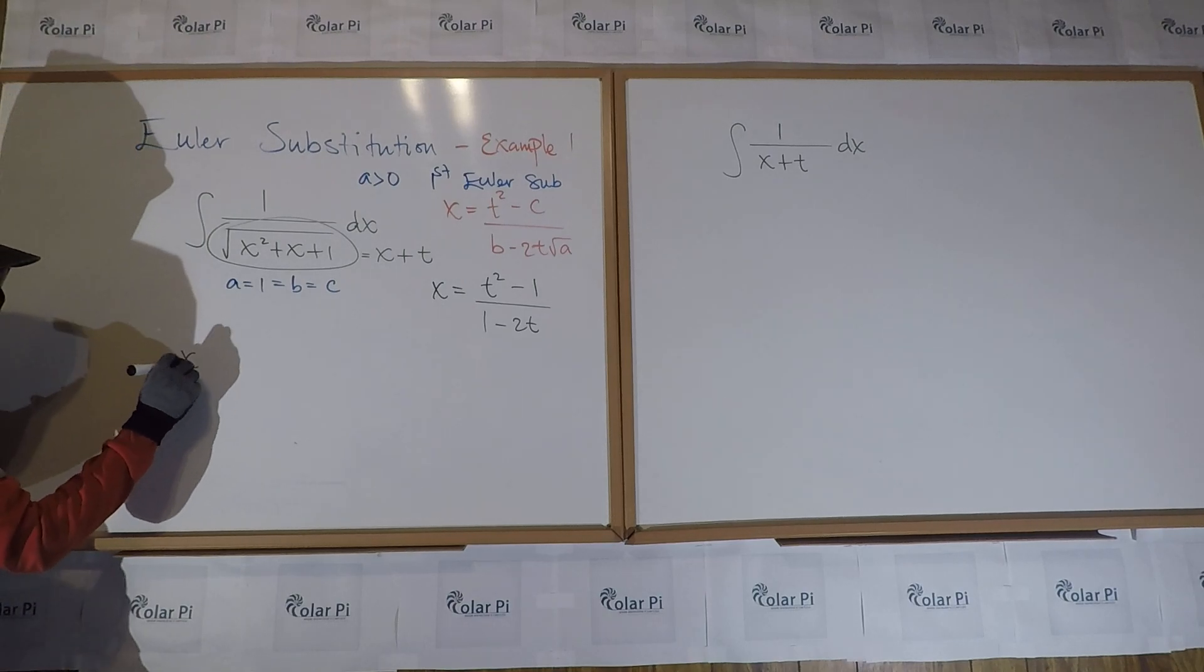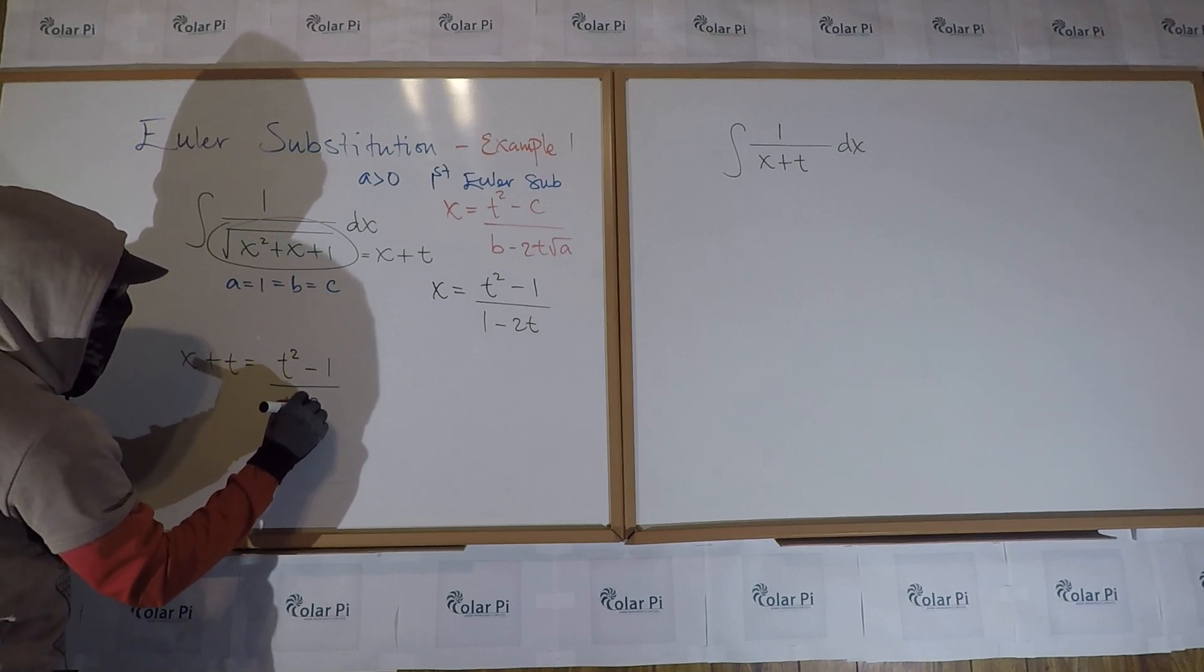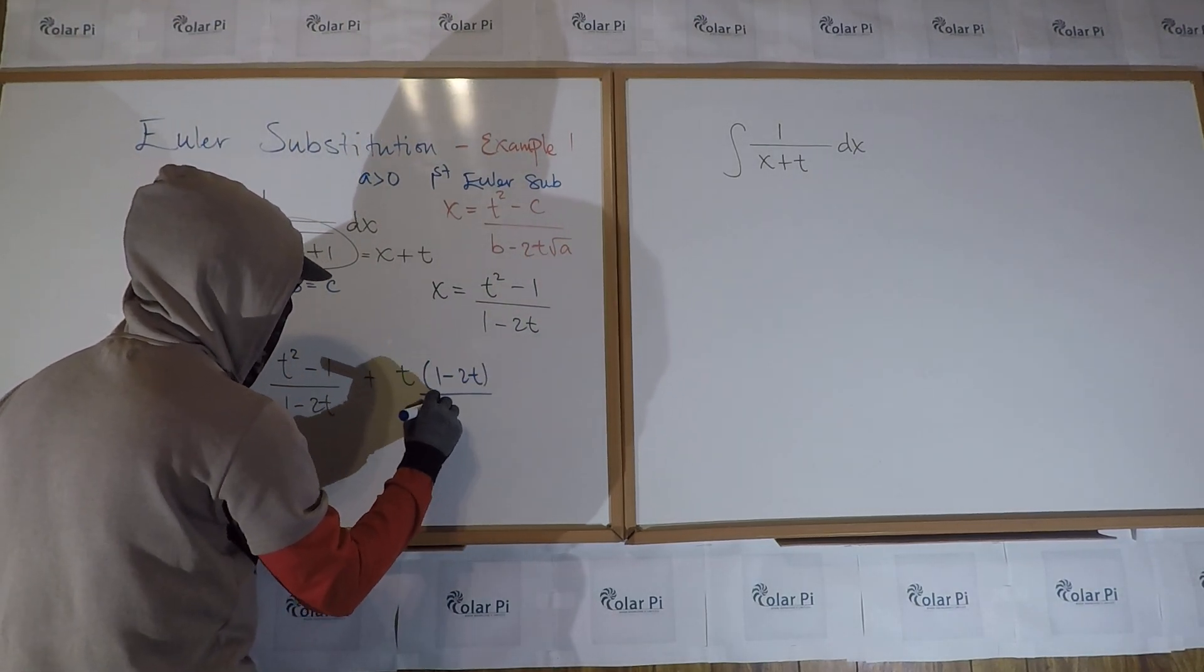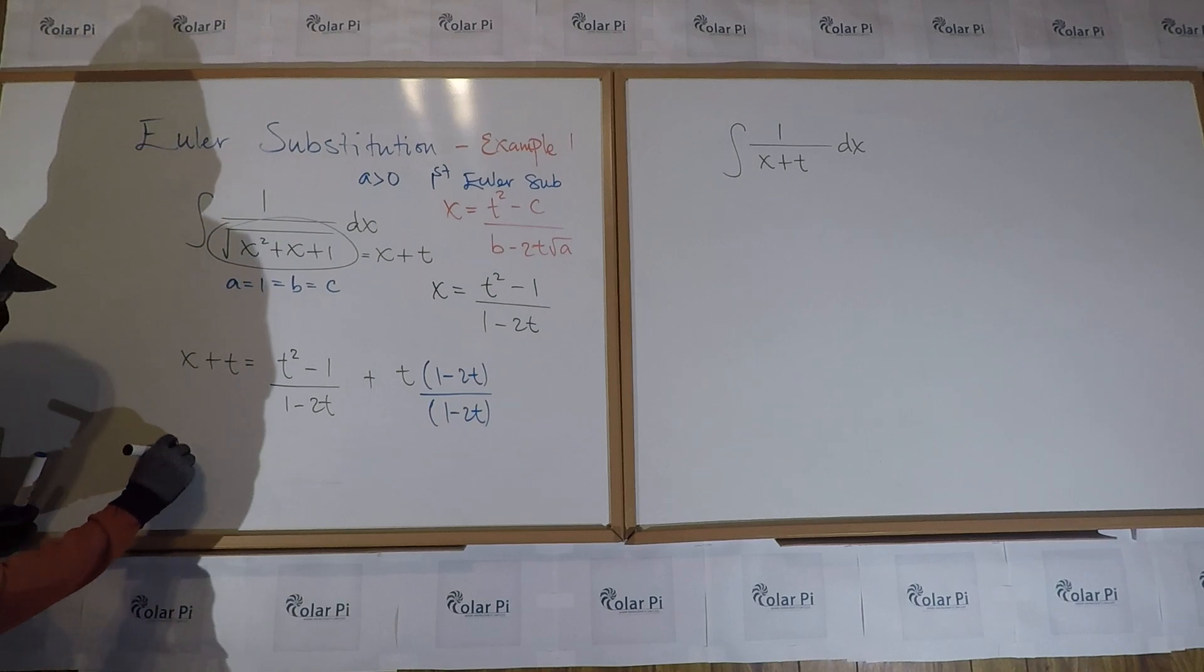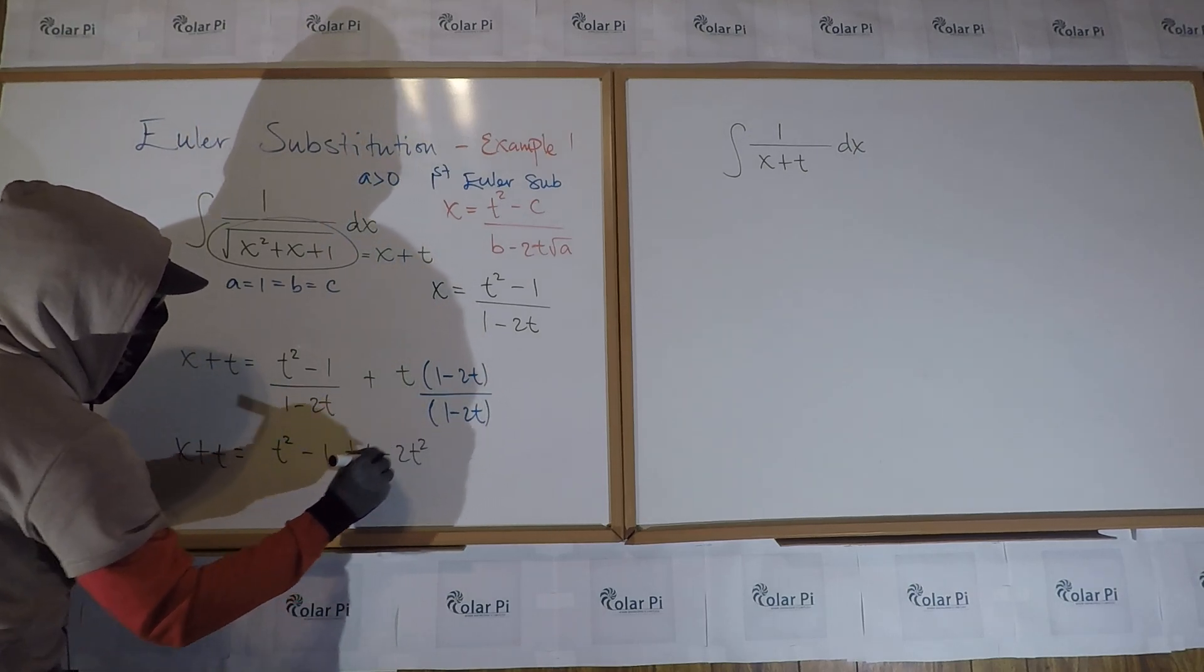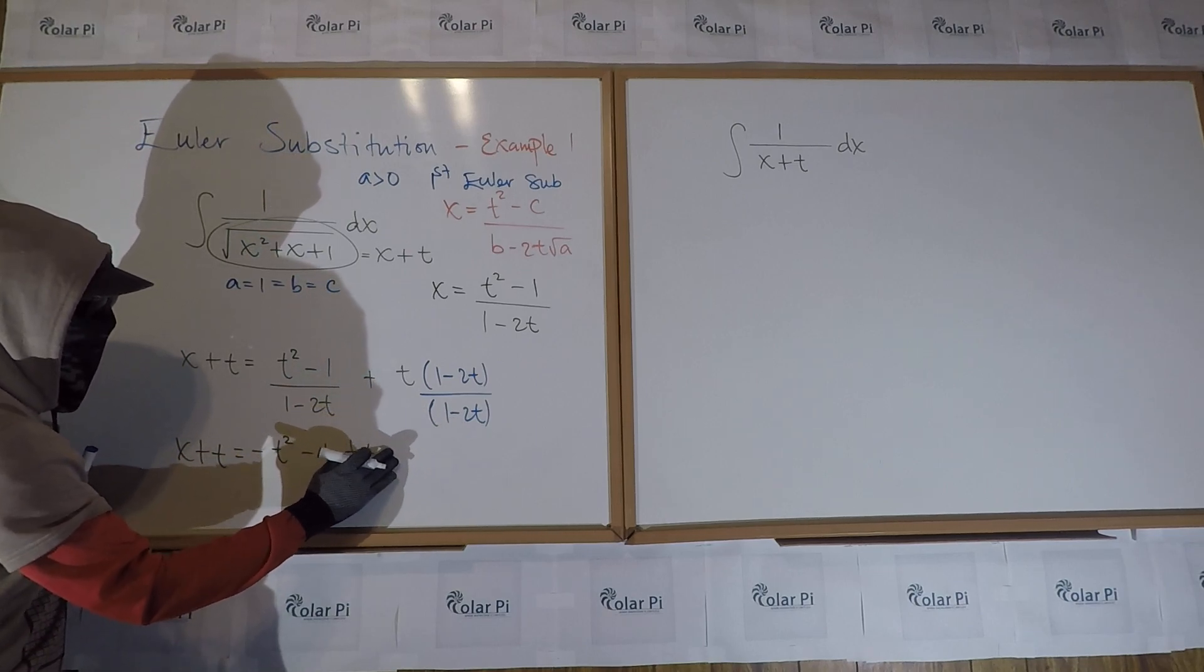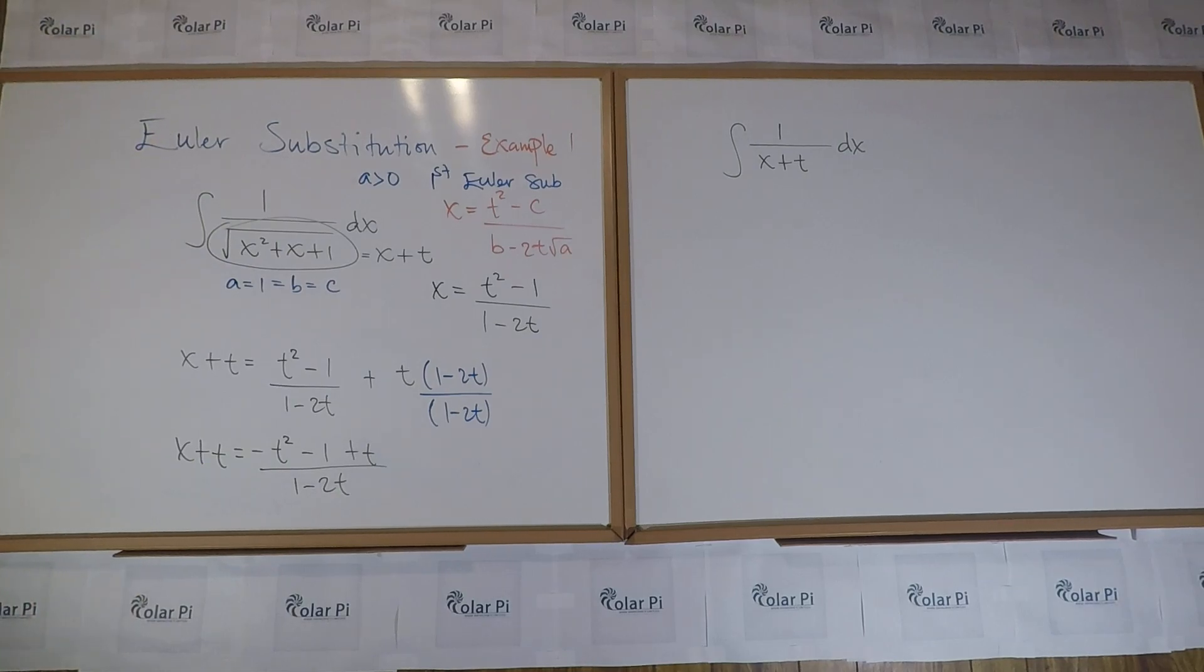Well, we have right now our integral is one divided by X plus T dx. And for this X, we have our replacement handy. So we can figure out what X plus T is. And thereafter, we need to figure out what DX is in terms of T, and we're good to go. First, let's figure out what X plus T is. So if X is this, then X plus T has to be equal to T squared minus one divided by one minus two T plus T. Let's get common denominators.